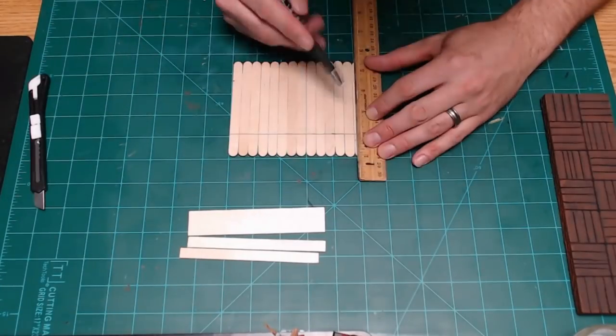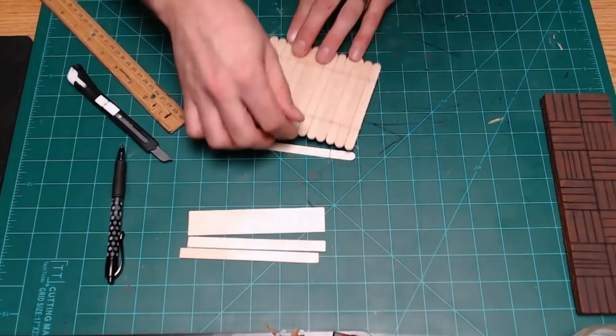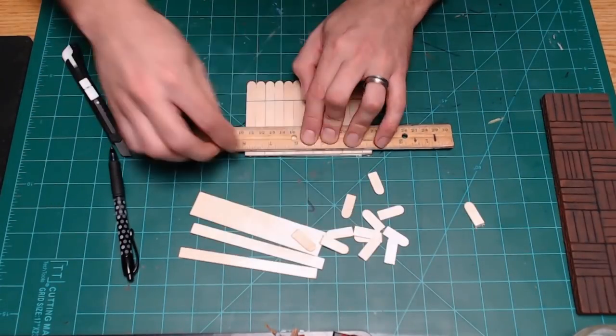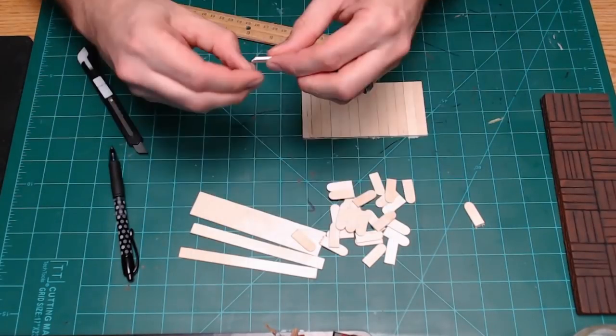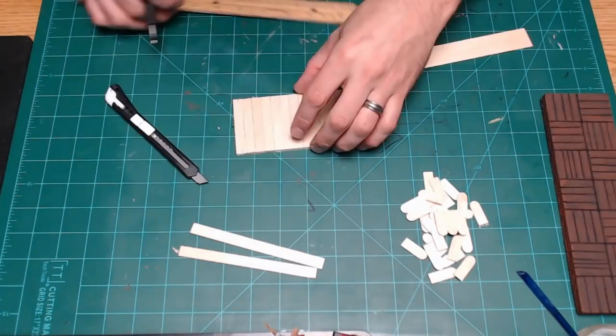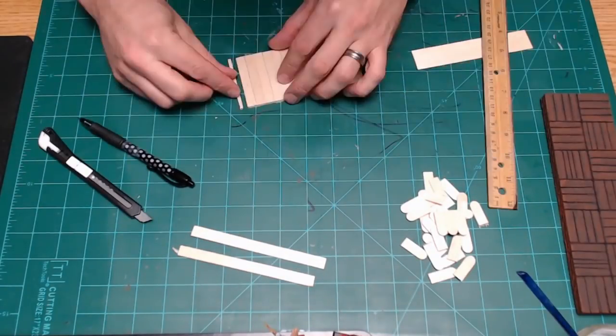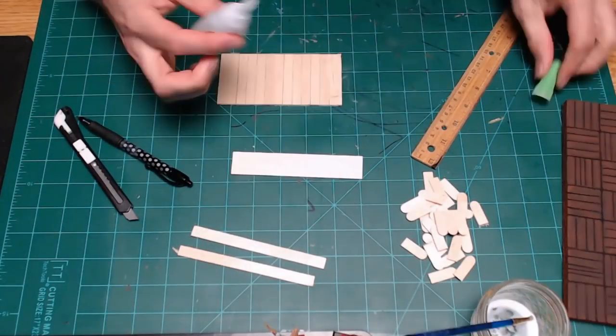If you do use the popsicle sticks like I do, you're going to need 14 of them for a five-inch wide wall section. Here I'm just repairing some of the glue that came apart. It's not terribly important that these stay together; it's just kind of helping me build the frame around the wall.